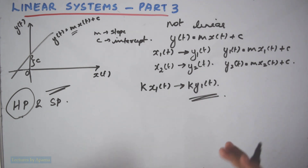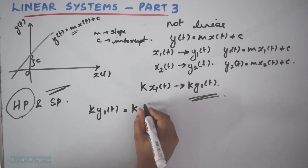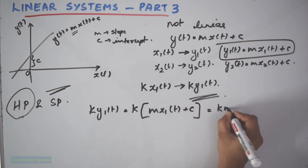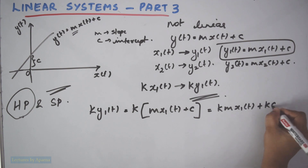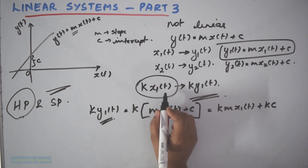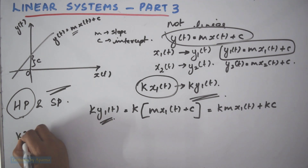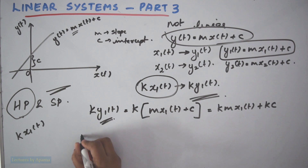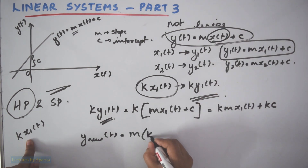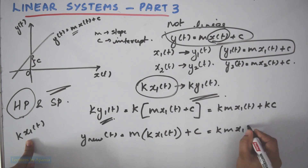If we get the output like this, then we can consider that the system is linear. So what is k·y1(t)? k·y1(t) = k·(mx1(t) + c) = k·m·x1(t) + kc. This is the value of k·y1(t) that we should get. Now let's put the input k·x1(t) to the system. The output will be: new y(t) = m·(k·x1(t)) + c = k·m·x1(t) + c.